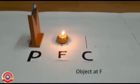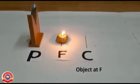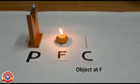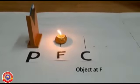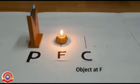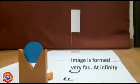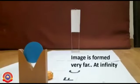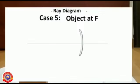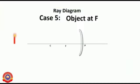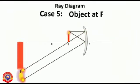Next, the object is placed at F. If the object is placed at F, the reflected rays are parallel, so the image is formed at infinity.